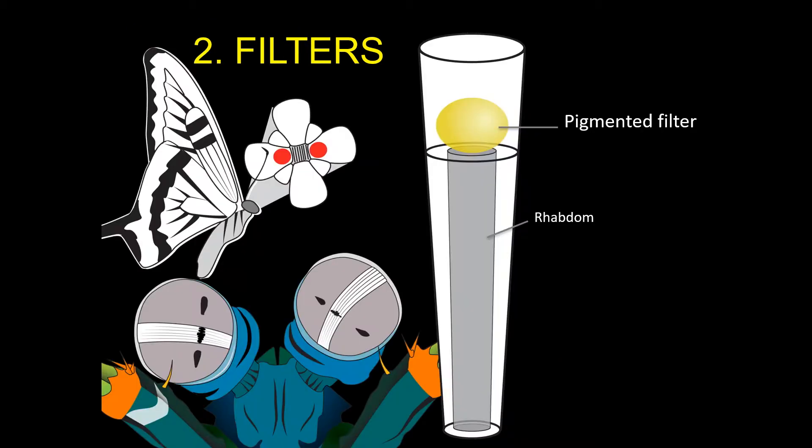Colorful filters work differently. These brightly colored structures are found above or around the photoreceptor, since they only allow specific colors or wavelengths of light to pass through them. When light enters the eye, only these transmitted wavelengths can reach the photoreceptor, ultimately improving or tuning color vision.